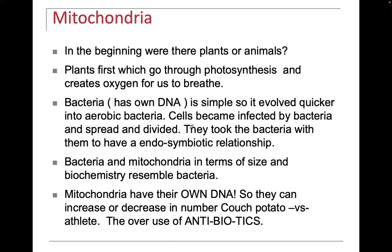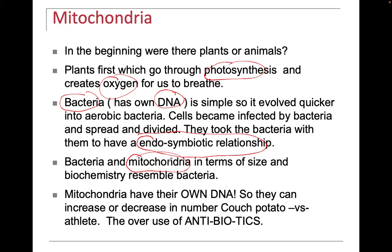Were there plants or animals first? First there were plants — they go through photosynthesis and create oxygen for us to breathe. Bacteria have their own DNA and evolved quickly into aerobic bacteria. The endosymbiotic theory suggests that mitochondria were really bacteria that learned to live in harmony with us to produce ATP. Mitochondria do resemble bacteria, which is why when we take antibiotics, we can destroy mitochondria and decrease ATP production.